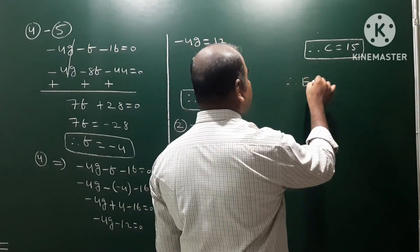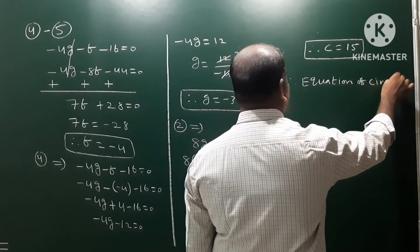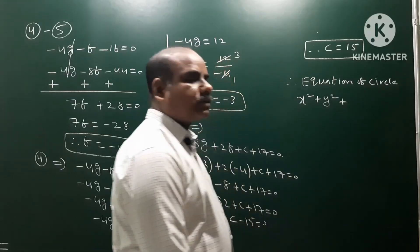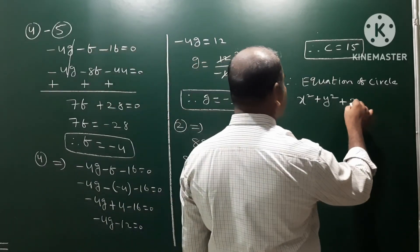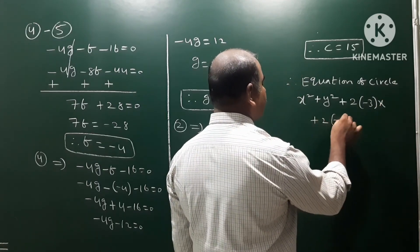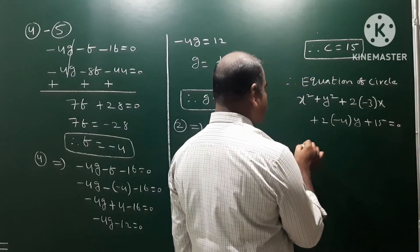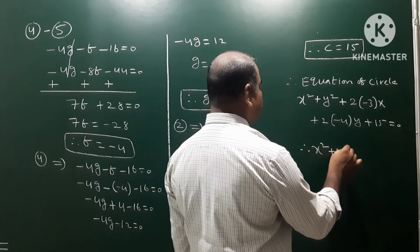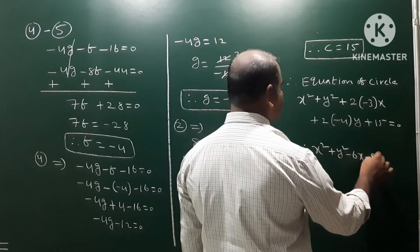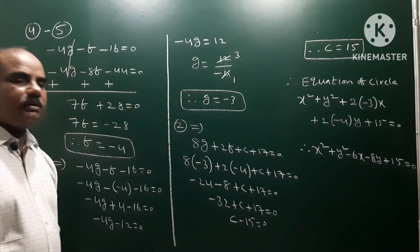Now we have all values: g equals minus 3, f equals minus 4, and c equals 15. Therefore the equation of the circle is x squared plus y squared plus 2gx plus 2fy plus c equals 0, which gives x squared plus y squared minus 6x minus 8y plus 15 is equal to 0. This is our required equation of the circle.